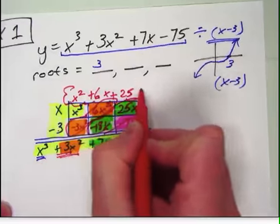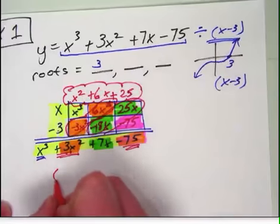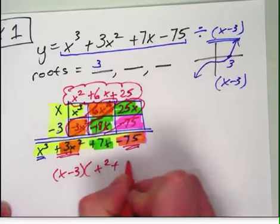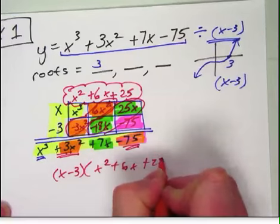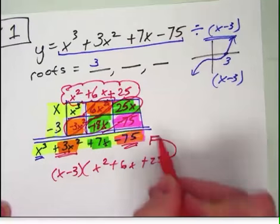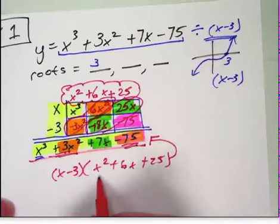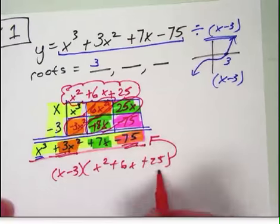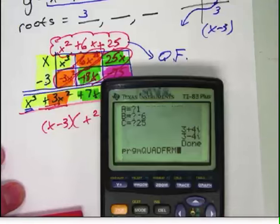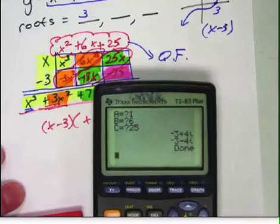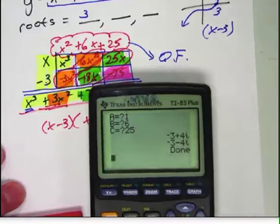This is what I was looking for, that's the other factor. So if I took x minus 3 and I took it times x squared plus 6x plus 25, it would make this original problem which I had right here to begin with. This is the quadratic piece. Now this I can just throw right into the quadratic formula. So I take this, put it into the quadratic formula, and I can do that on my calculator. I can go program, quad form, and type in the numbers 1, 6, and 25. And when I do that, I get the other two roots which are negative 3 plus 4i, and negative 3 minus 4i.